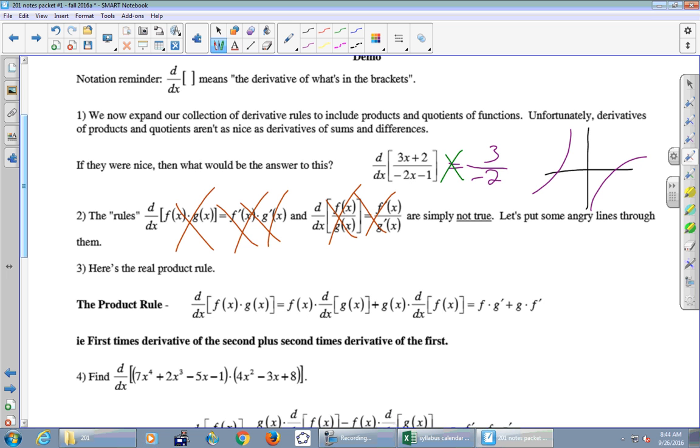So number 3 tells us the real product rule. It says if you want to find the derivative of f(x) times g(x), two functions with x's in them, you do the first function, f(x), you multiply by the derivative of the second function, derivative of g(x). Then you add, that's kind of crazy, g(x), that's the second function, times the derivative of f(x), the first function. I don't remember all those symbols. I remember this thing here in bold. The product rule says first times derivative of the second plus second times derivative of the first.